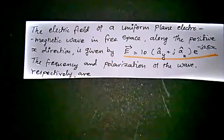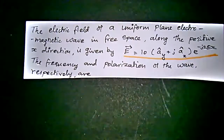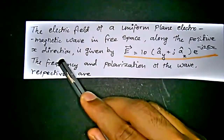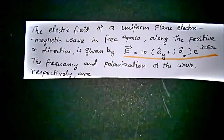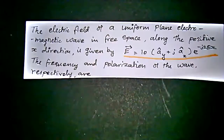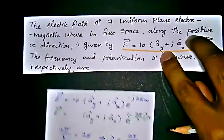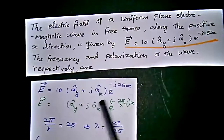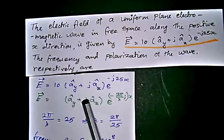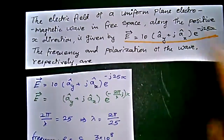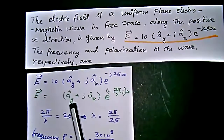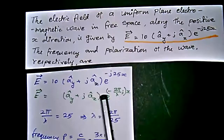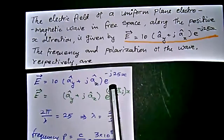We have to find the frequency and polarization of the wave. Let us rewrite the values of the electric field given in the problem: E vector equal to 10(a-cap-y plus j a-cap-z) multiplied by e to the power minus j25x.